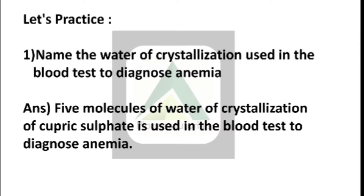Question number 1: Name the water of crystallization used in the blood test to diagnose anemia. The answer is 5 molecules of water of crystallization of cupric sulfate. 5 molecules of water of crystallization of cupric sulfate is used in the blood test to diagnose anemia.